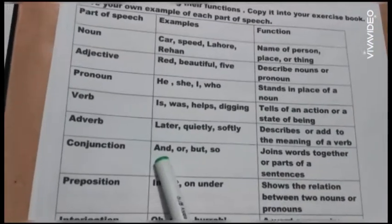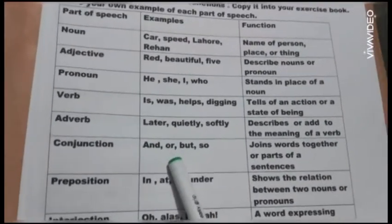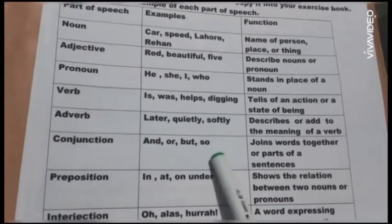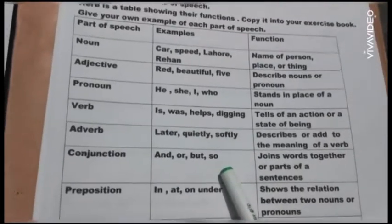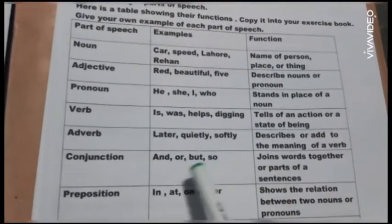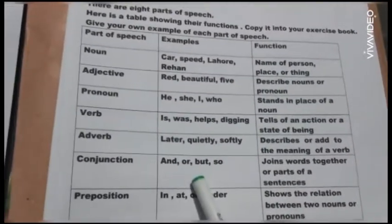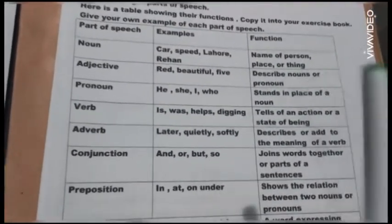For example: and, or, bird, so. This is how you give this example. Now, let's use it in the syntax. In conjunction, you can see.